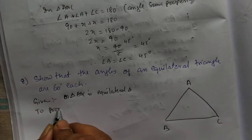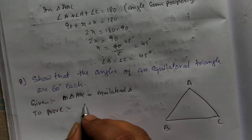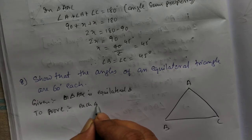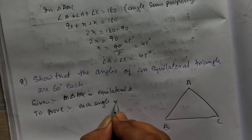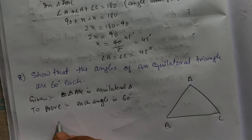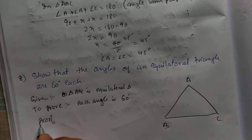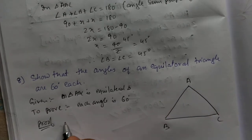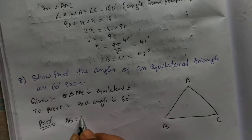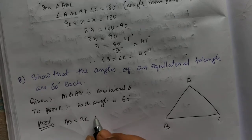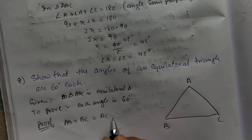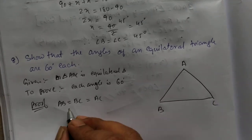To prove: each angle is 60 degree. If the triangle is equilateral triangle, all the sides are same. AB will be equal to BC and which will be equal to AC. If all the sides are same, even the angle become same.